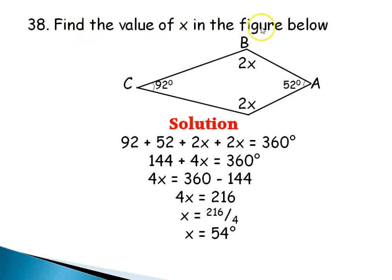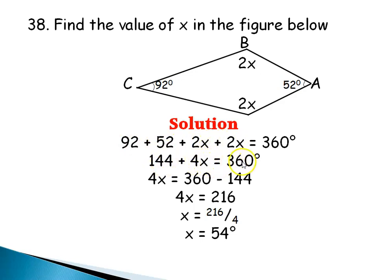Question 38: Find the value of X in the figure below. This figure is a quadrilateral with 4 sides, and the sum of angles in a quadrilateral is 360 degrees. Adding all angles: 92 + 65 + 2X + 2X = 360. 92 plus 65 is 157, so 4X = 360 − 157 = 203... giving X = 54 degrees.